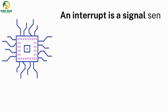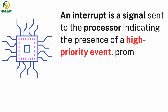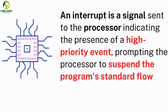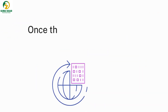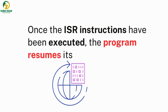An interrupt is a signal sent to the processor indicating the presence of a high-priority event, prompting the processor to suspend the program's standard flow and execute the ISR instructions. Once the ISR instructions have been executed, the program resumes its normal flow.